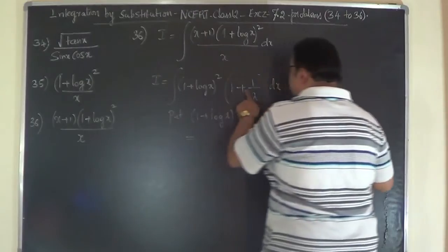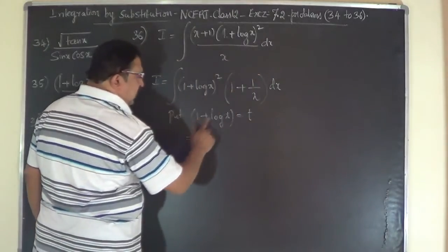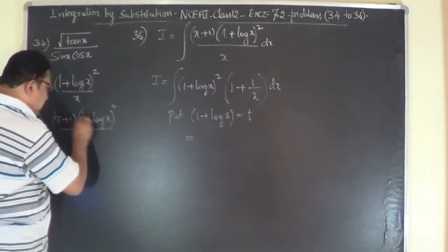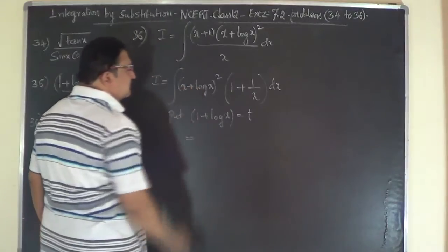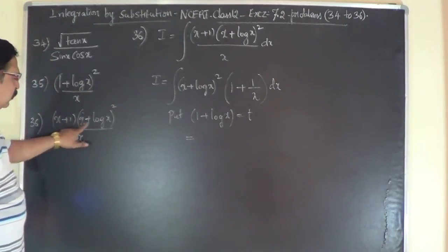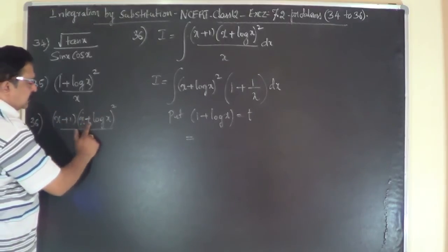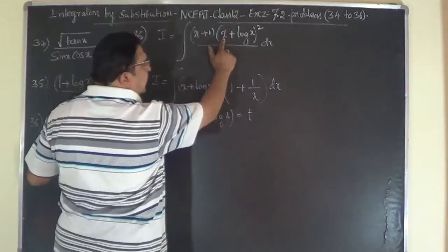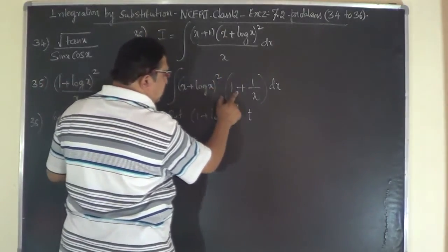To have 1 plus 1 by x dx as the replacement factor, the problem should actually read x plus log x. Please make the correction — it is not 1 plus log x as written earlier. It is x plus log x whole square divided by x dx. So x plus 1 over x is 1 plus 1 by x. This gives (x + log x)² into 1 plus 1 by x dx.